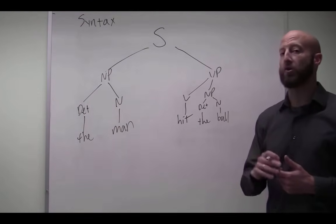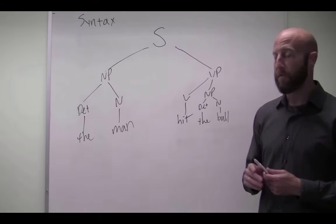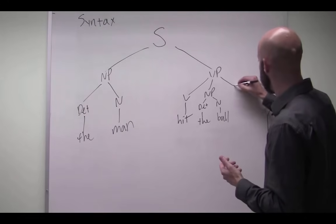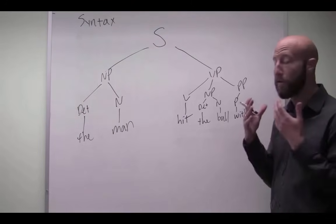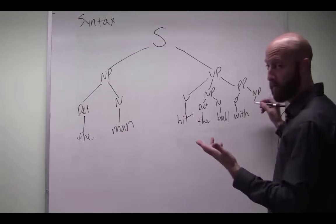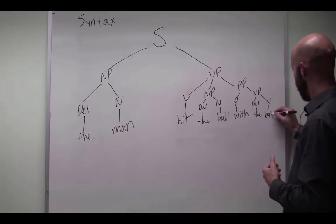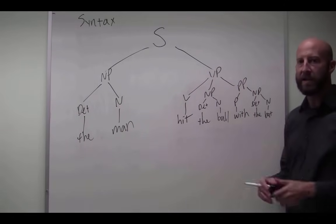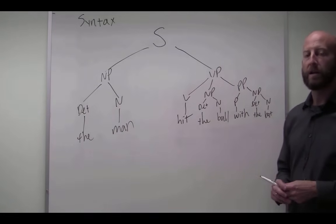So remember, our phrase structure rules in English say that a prepositional phrase must contain a preposition and a noun phrase. So that tells you right there that with the bat has to start with the preposition, with, and then you have another noun phrase within this prepositional phrase. The, as a determiner, and then you have the noun, bat. The man hit the ball with the bat. So that's, again, how you can see this embedding phrases within phrases so you can get the recursive property that we see in human language.